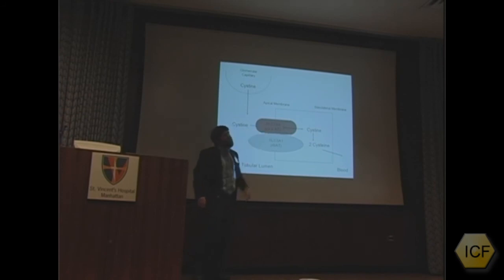That gene is called SLC7A9. That's the name of the gene, and that's one of the genes that's responsible for one form of cystinuria. If that gene is mutated, the protein is not made properly, and then cystine cannot move through that pore.